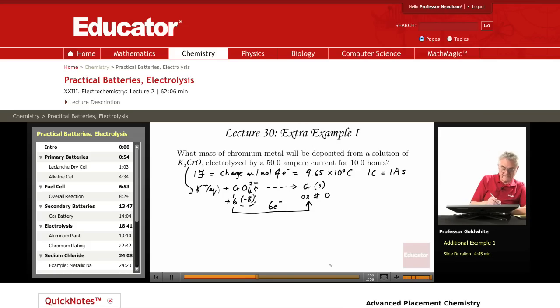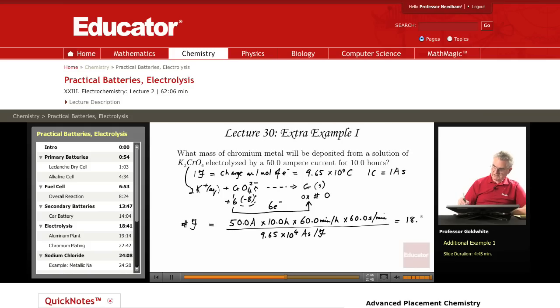Well, the number of Faradays passed in this electrolysis is 50.0 amperes times 10.0 hours times 60.0 minutes per hour, divided by 9.65 times 10 to the fourth ampere seconds per Faraday. And that equals 18.65.